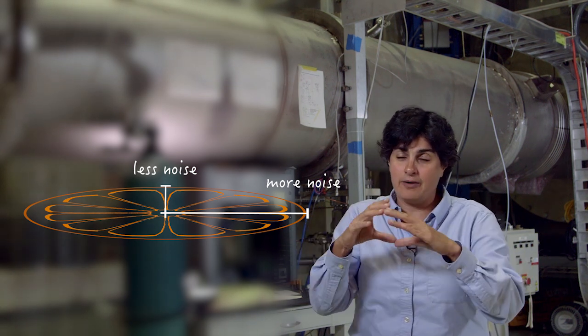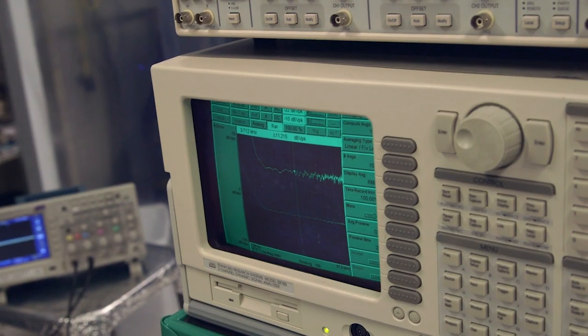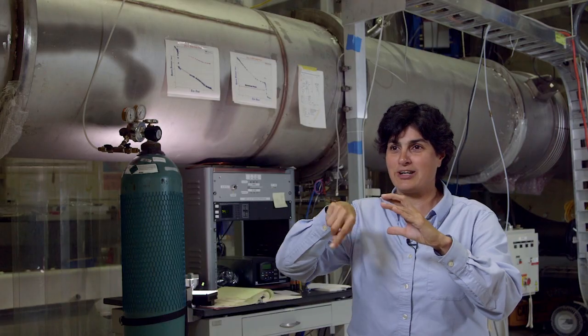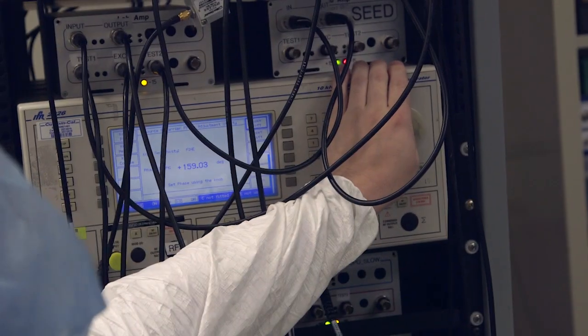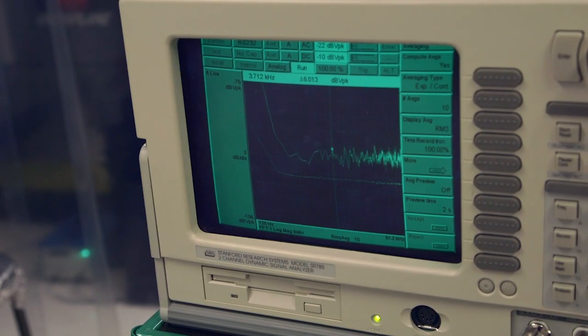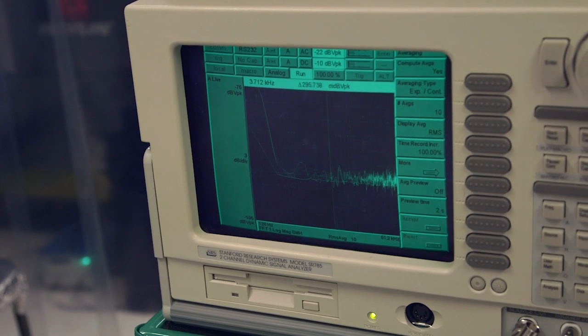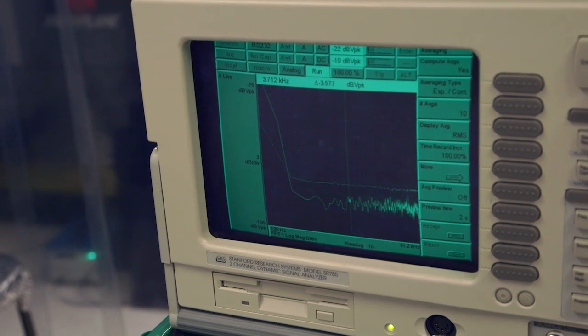When we look at the shot noise level, that first line, that's just the round ball. It just basically says noise is equal anywhere you look. So when we use squeeze light, we actually are arranging the quantum fluctuations of the light so that they are smaller along the axis we're measuring,